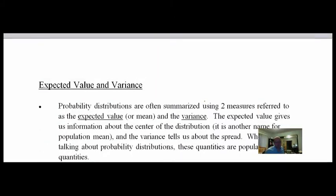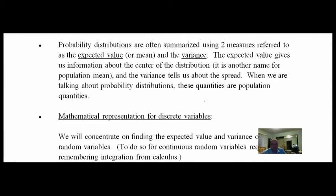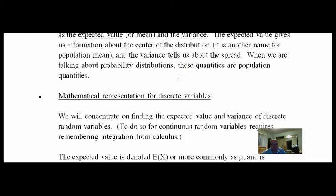Let's move on. We finished talking about expected value and variance. Probability distributions are summarized by two measures: expected value, which we can think of as the mean, and the variance. It's the same as we've talked about from day one. The mean is the center of the distribution and the variance is about spread. When we're talking about probability distributions, those quantities are population quantities, so that's why we talk about mu and standard deviation. When we deal in probabilities, we're almost always talking about populations.